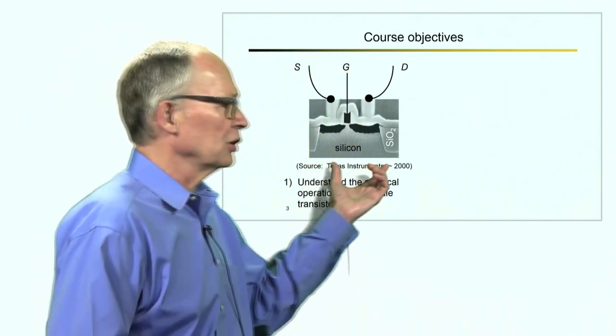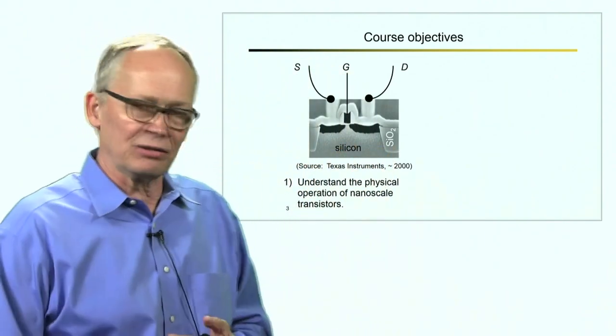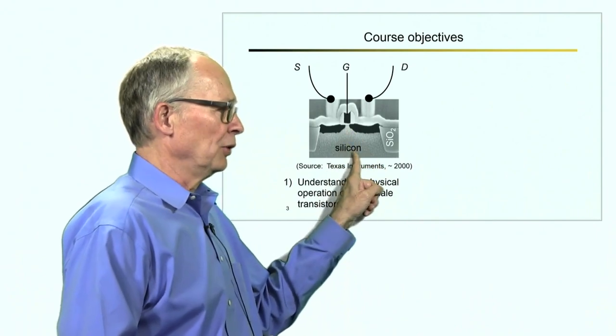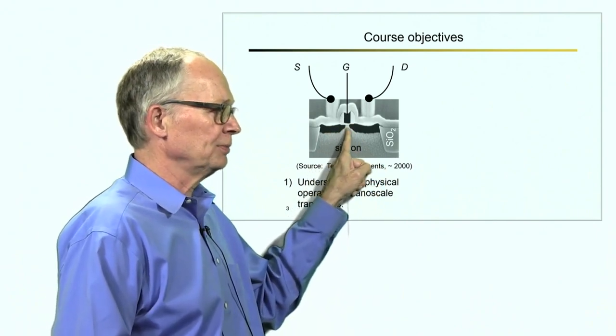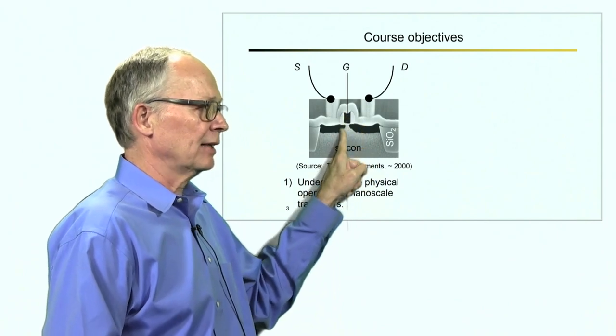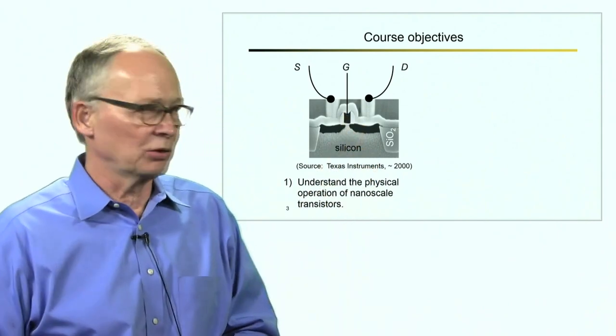This is what a transistor looks like. This is a cross-sectional electron micrograph. It's built on a piece of silicon. There are three main components: a source, a drain, and a gate that controls the flow of electrons from the source to the drain.